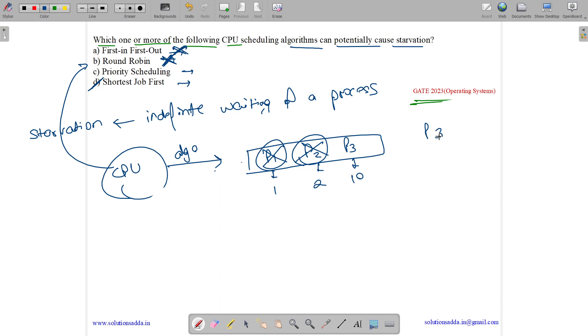Then P4 will get executed. Now assume another new process comes with priority 6, so P5 will get executed and P3 will keep on waiting as higher priority processes keep on coming and it can happen for infinite time. Thus priority will also suffer from starvation.